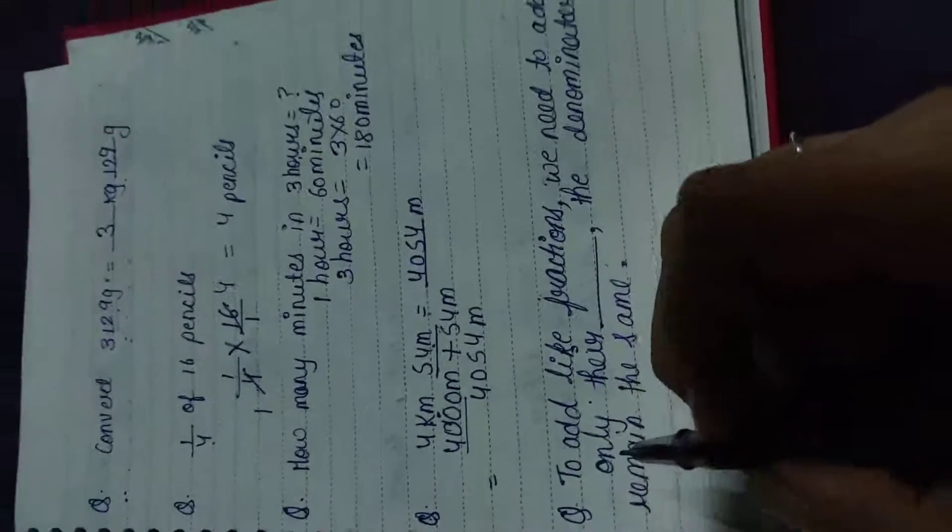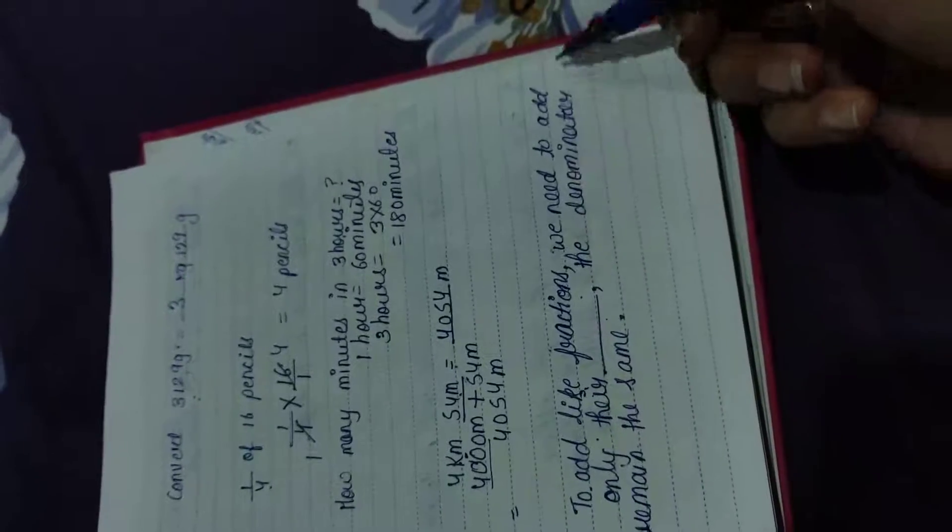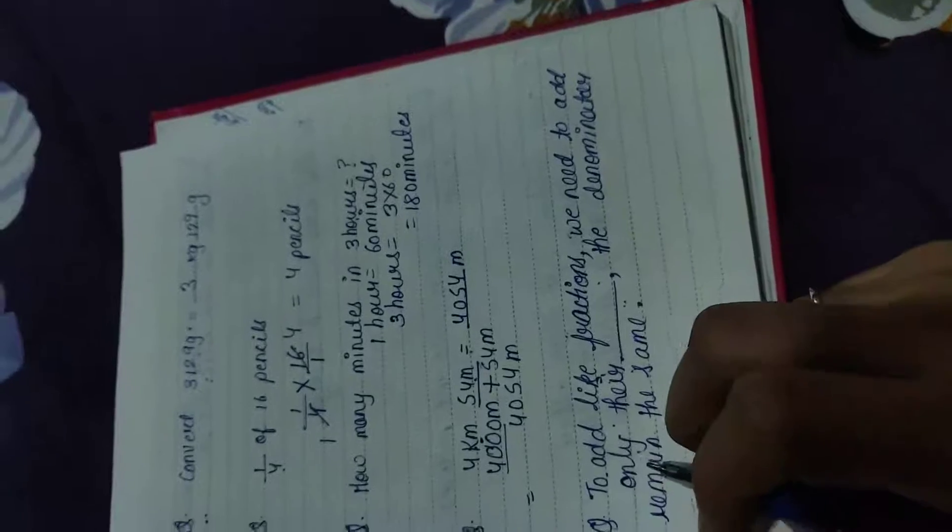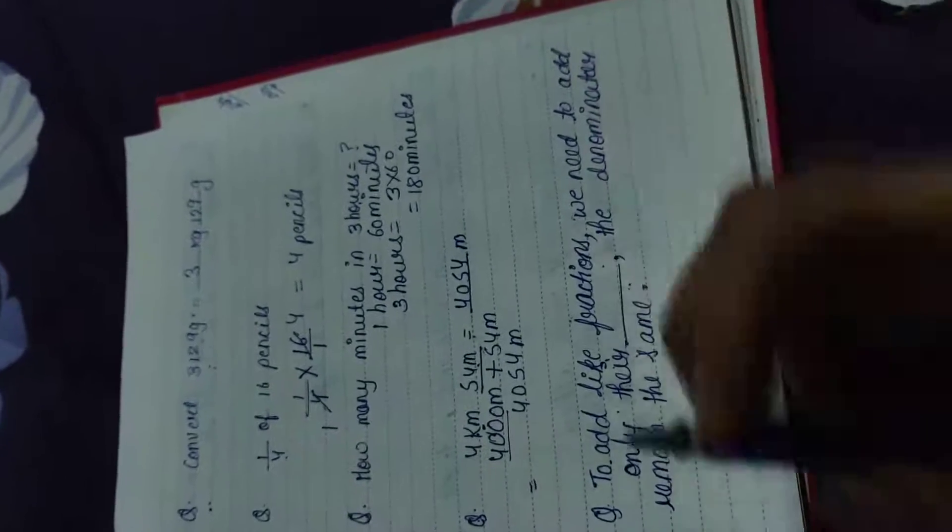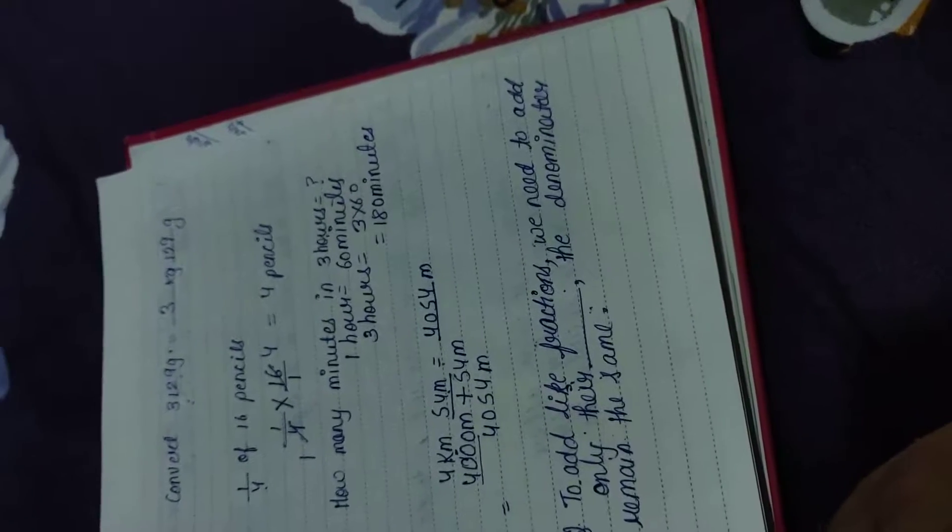Next question, aapka fill up hai. Jo pooch raha hai: To add like fractions we need to add only their dash, the denominator remain the same. Jab bhi hain like fractions ko add karna hota hai, to hum kya add karte hain? Aur humesha humara denominator same hota hai?